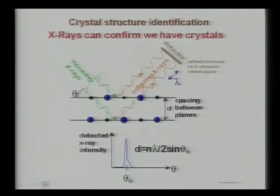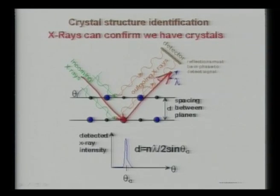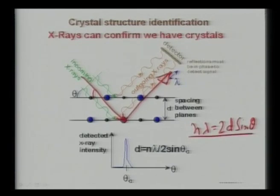One simple way to assess structure in a material is X-ray diffraction. If there are two parallel atomic planes and incoming X-rays are diffracted by them, based on the angle of diffraction you can apply Bragg's law: nλ = 2d sinθ, where n is the order of reflection, λ is the wavelength of the X-ray, d is the interplanar spacing, and θ is the angle of diffraction.